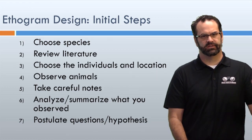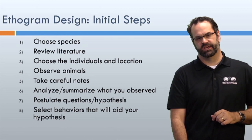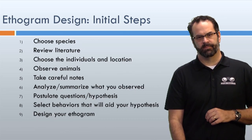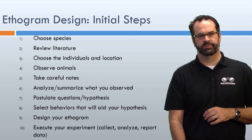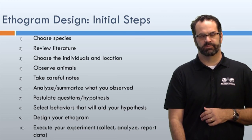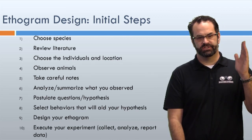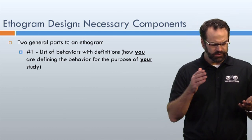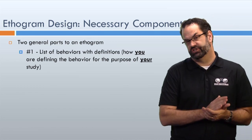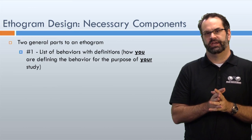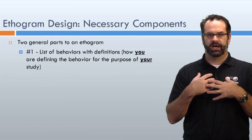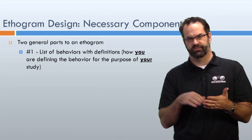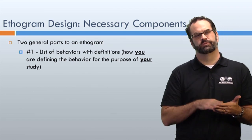Fifth, postulate your research questions and hypothesis. Sixth, select the behaviors that will help you answer your research question. Seventh, design your ethogram. Eighth, execute your experiment and collect your data. Ninth, analyze your data. Tenth, discuss and communicate it to others. Now, some necessary components: you need a list of behaviors with definitions. This is you and your research group defining each behavior — you define what 'play' means, what 'affiliative' means, what 'submissive' behavior is. Be very specific.